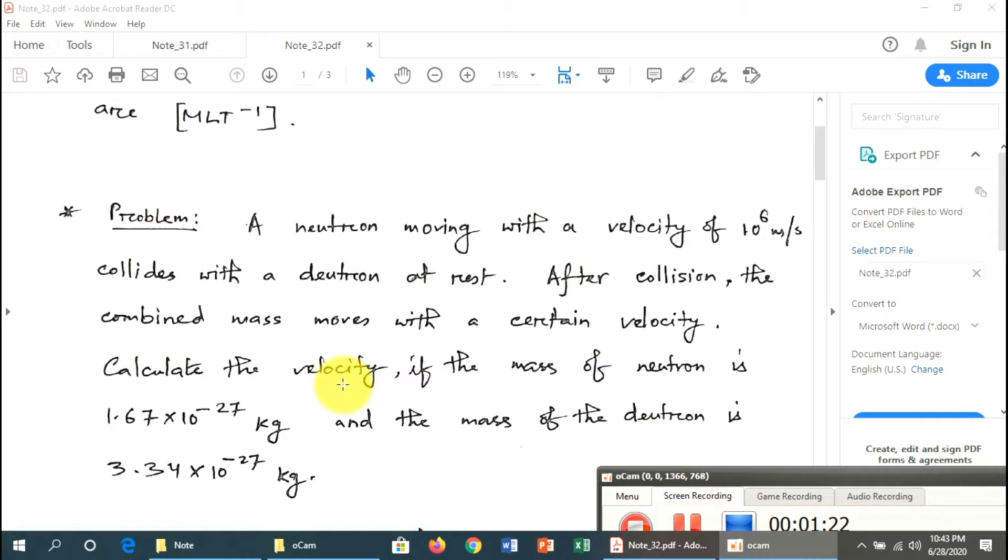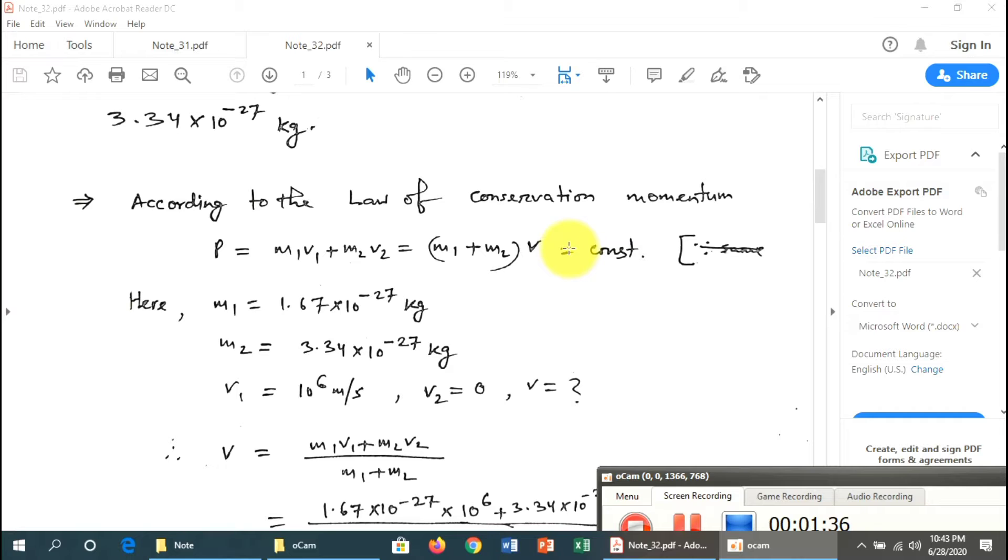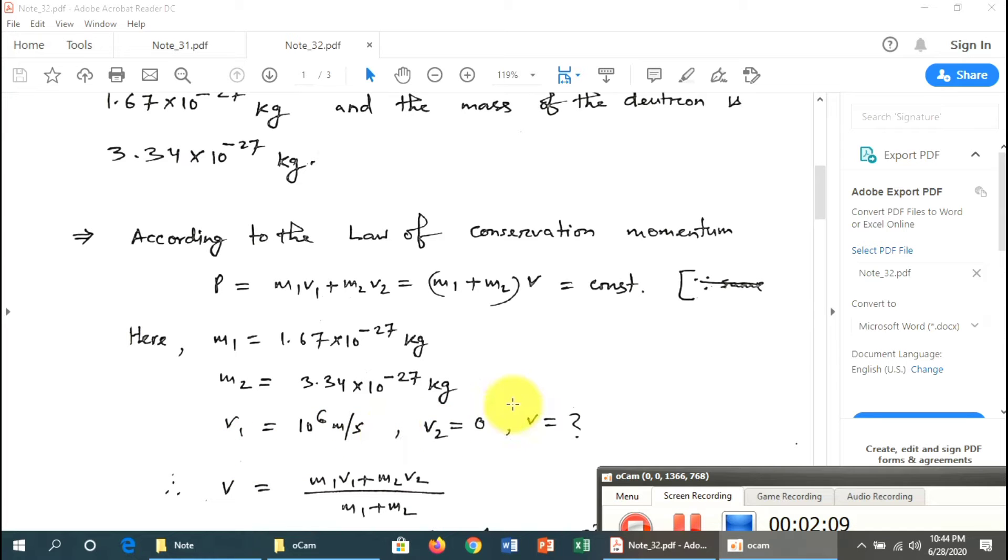We apply the conservation law of momentum. According to the law of conservation of momentum, m1v1 + m2v2 is equal to m1u1 + m2u2. Here, m1 is the mass of the neutron, 1.6 × 10^-27 kg, and m2 is the mass of the deuteron, 3.34 × 10^-27 kg. v1 is 10^6 m/s.